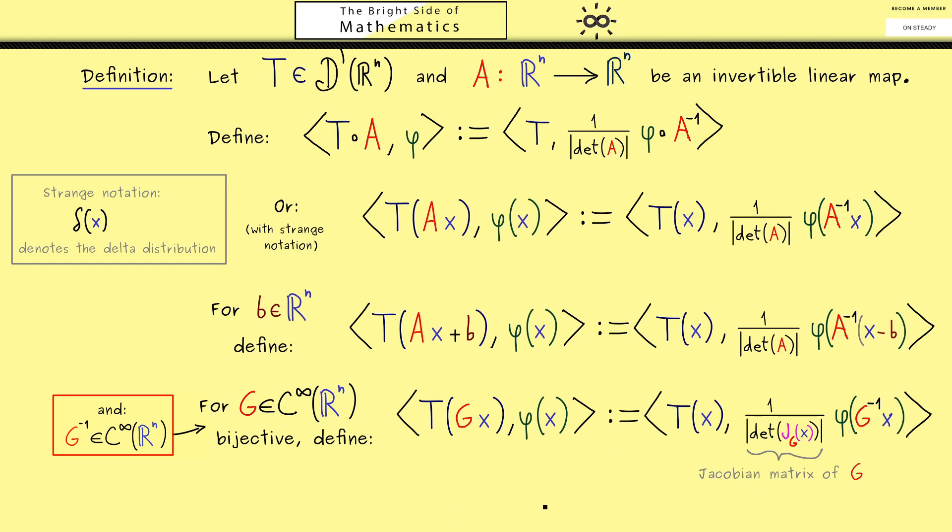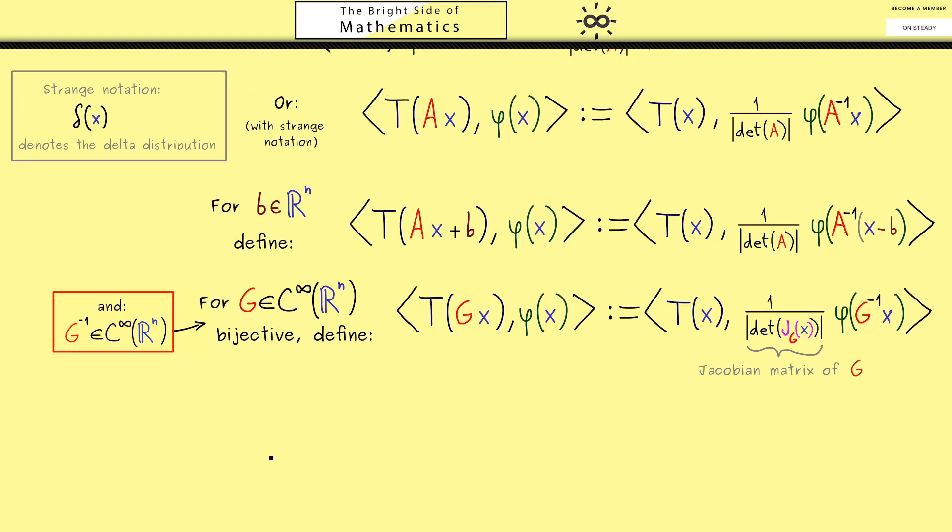Okay then I would say at the end of this video here let's look at an example. And maybe because we have talked about this before let's take the delta distribution again. And moreover our coordinate transformation A should be a rotation. This means A inverse should be the same as A transpose. In particular this implies that the absolute value of the determinant is 1. Hence the formula from above is a little bit simpler.